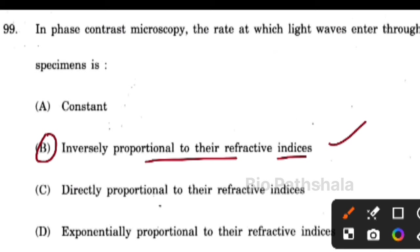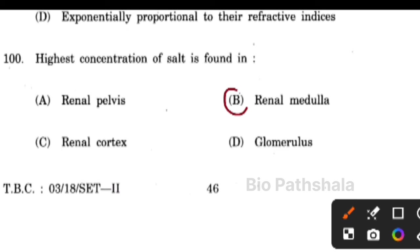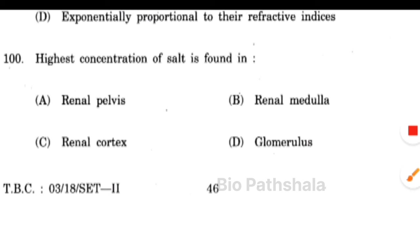Next question: the highest concentration of salt is found in the renal medulla — not the renal cortex; the highest concentration is found in the renal medulla. This concludes the 2018 life science paper with 100 questions and their answers. The rest of the question papers can be found on the channel.